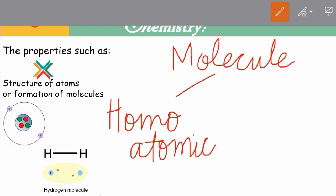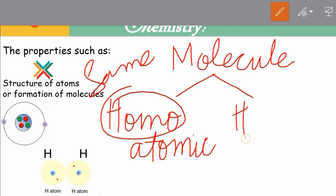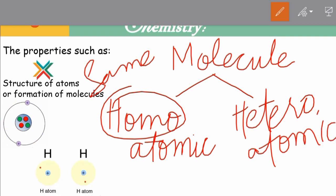While molecules made up of different types of atoms are known as heteroatomic molecules. Homo means same and hetero means different. For example, if we talk about water, it is made up of two atoms of hydrogen and one atom of oxygen, so it is called a heteroatomic molecule.